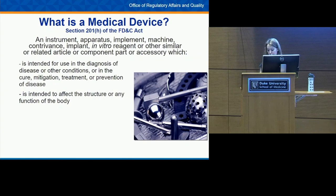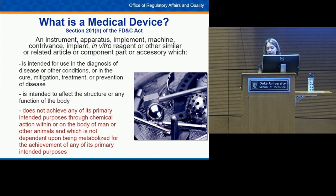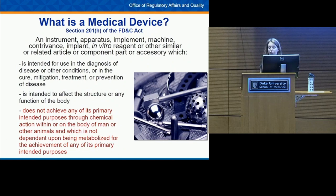Importantly, a medical device does not achieve any of its primary intended purposes through chemical action within or on the body of man or other animals, and is not dependent upon being metabolized. We like to think of medical devices as using physical or mechanical force — for example, a stent uses mechanical force to keep the artery open, not chemical action. Also, a device cannot use chemical action within or on the body, but it can use chemical action outside the body, such as a urine pregnancy test, which is still considered a medical device.